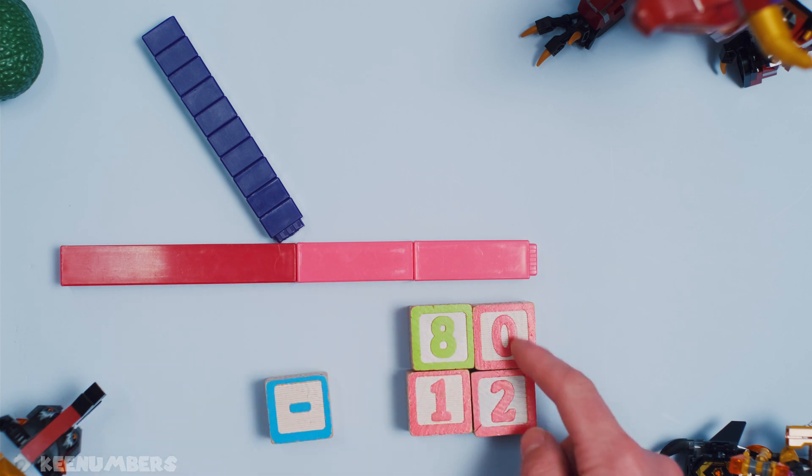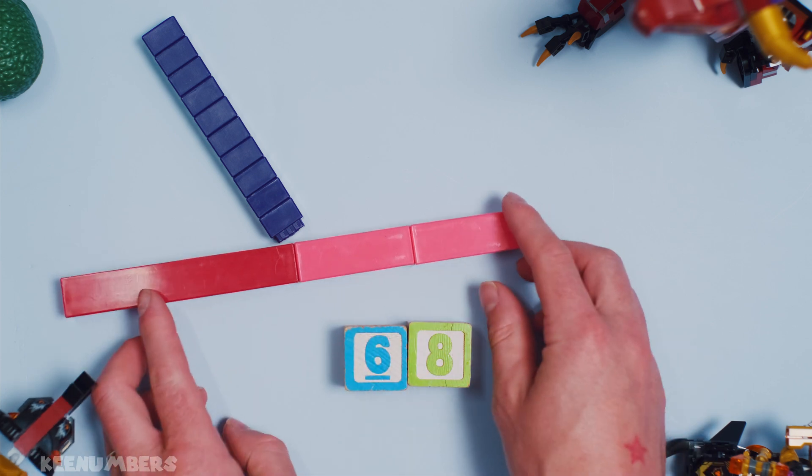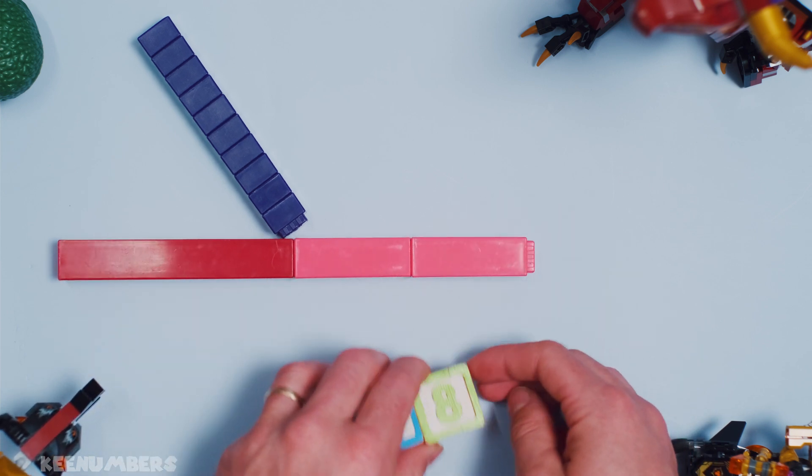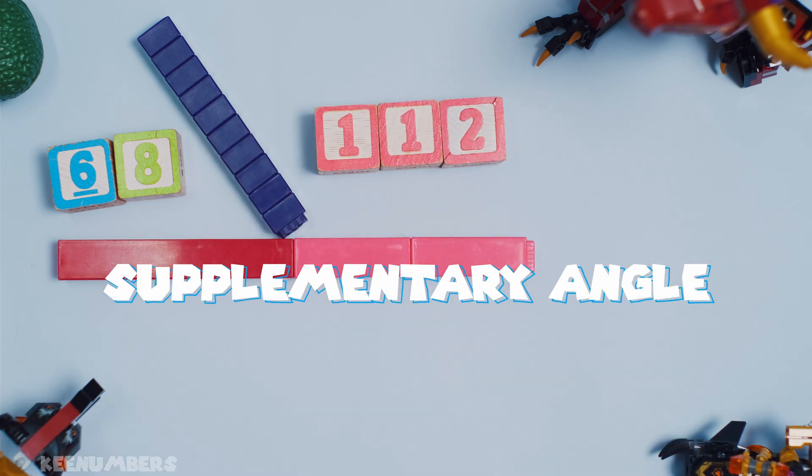And then you have minus 2 here. So 7 tens minus 2, that's just a fancy way of saying 68. 68 is the supplementary angle here to 112.